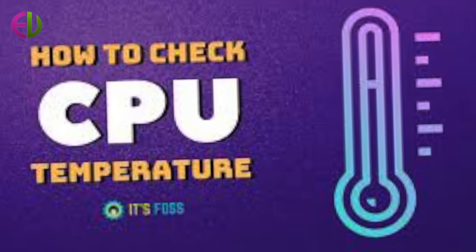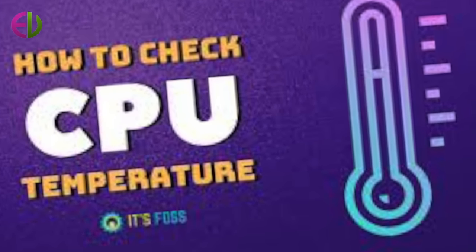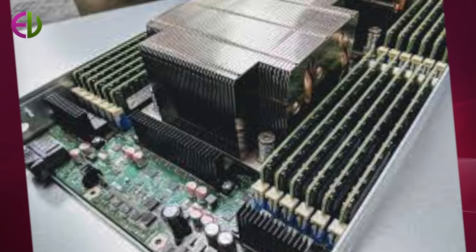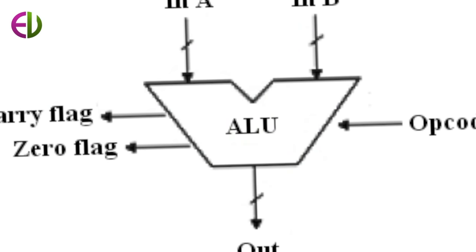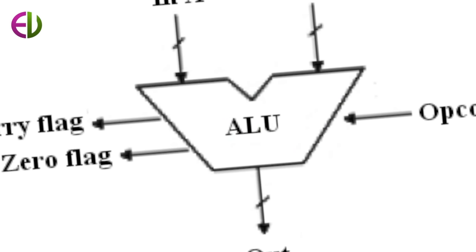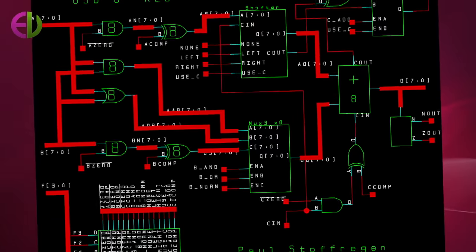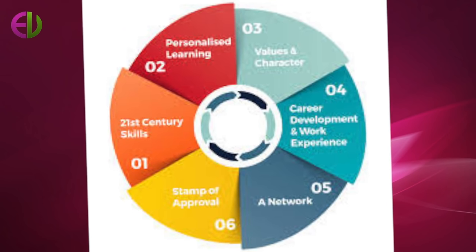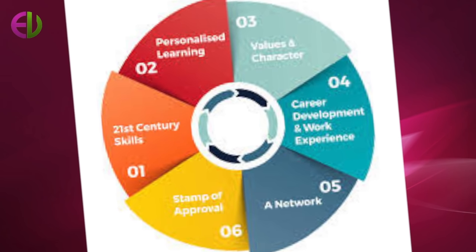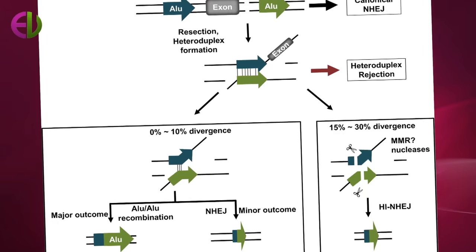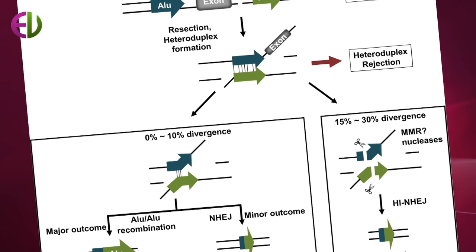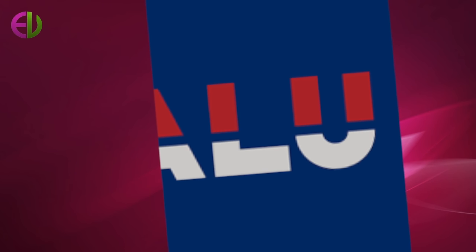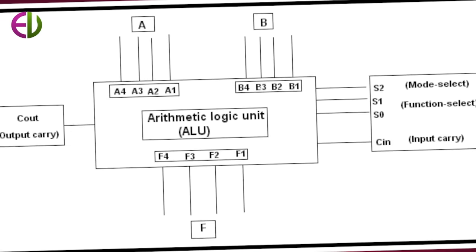Computer hardware falls into two categories: processing hardware, which consists of the central processing unit and the peripheral devices. The CPU is where the data processing is done. Peripheral devices allow people to interact with the CPU. Together, they make it possible to use the computer for a variety of tasks. The main parts of a computer are shown in the figure.